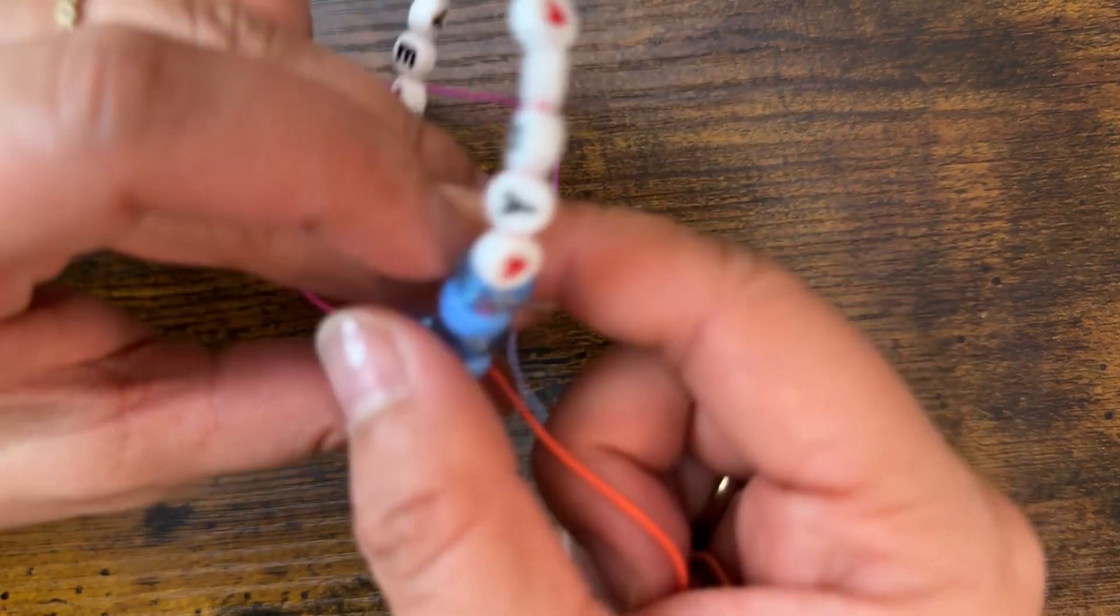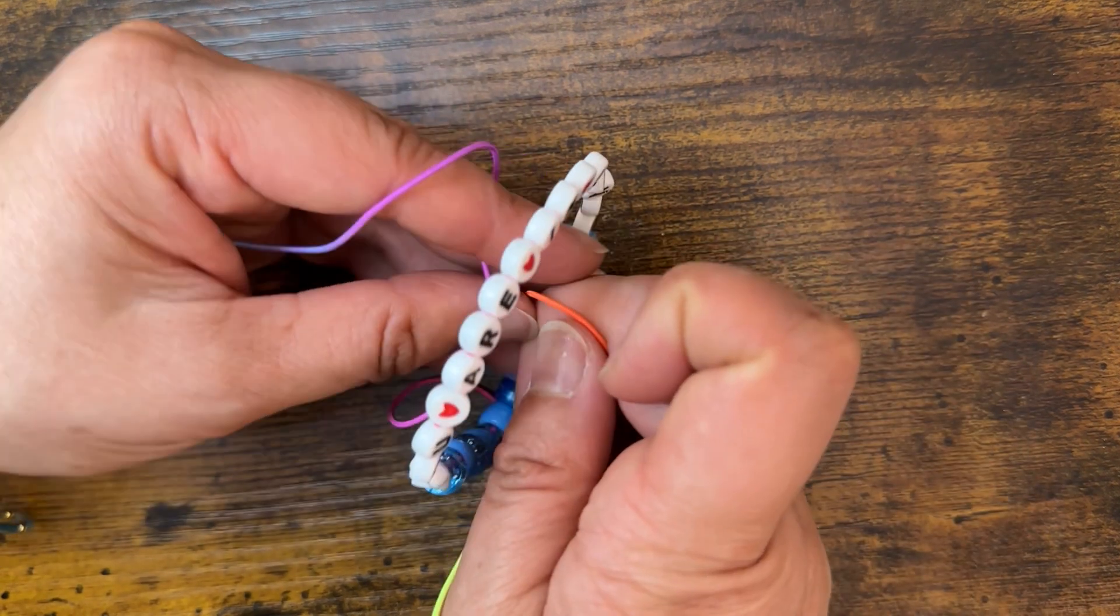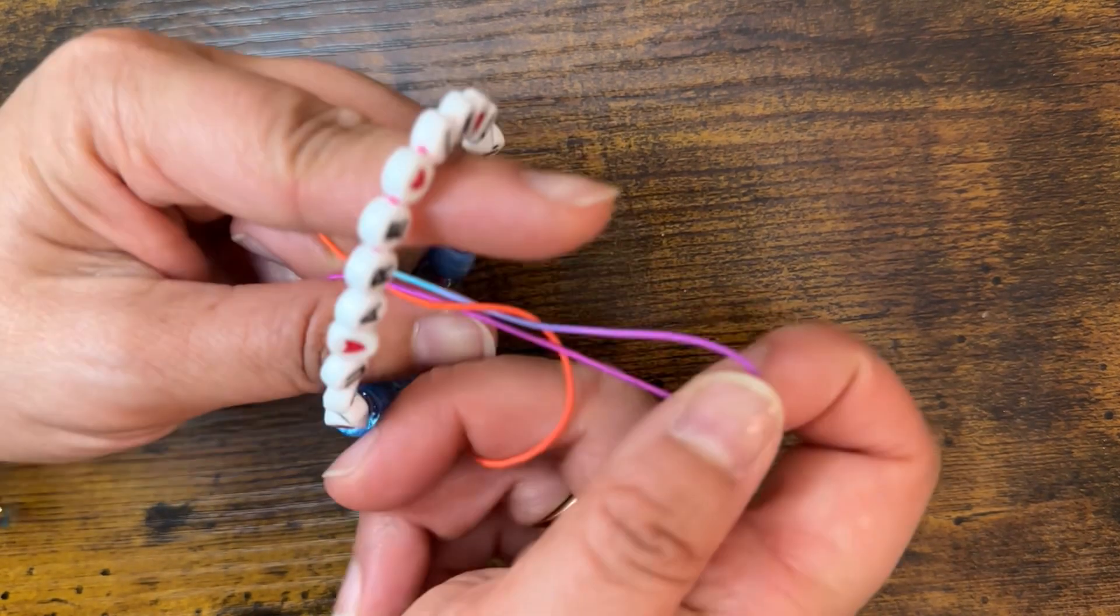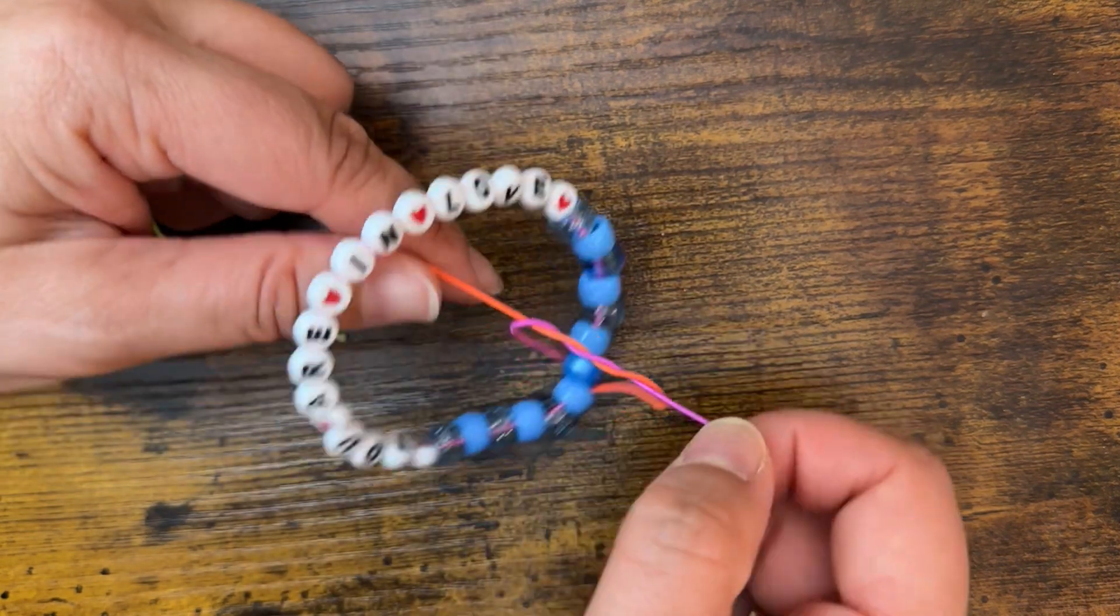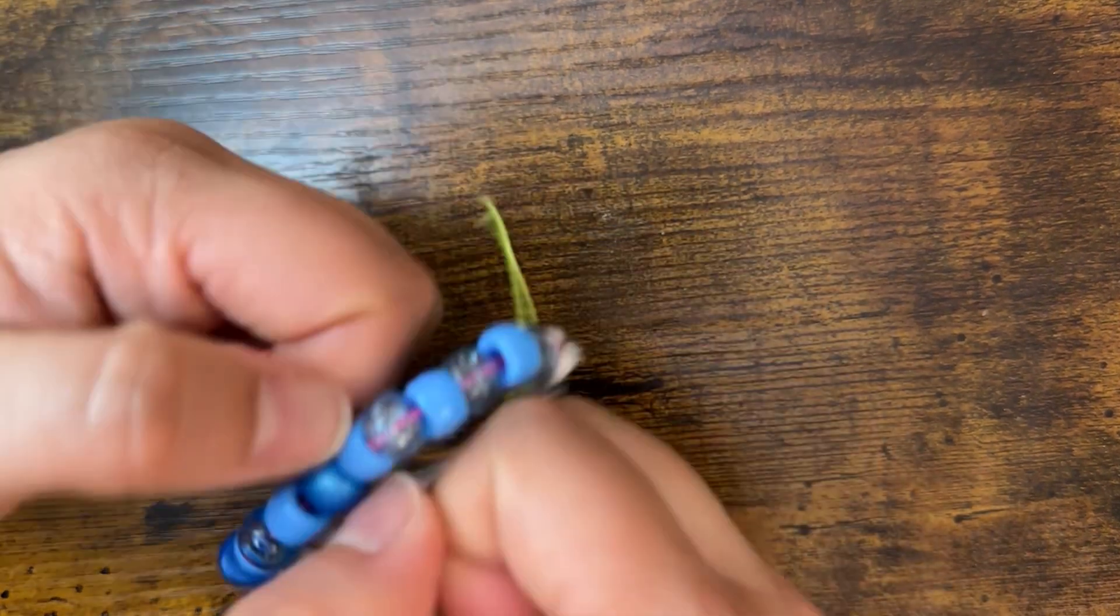Then what I like to do is flip it to the other side. That's why I use this string versus the alternative see-through string, which may look better, but in the long run it doesn't matter how good it looks if it doesn't stay. So then I do another double tie on the other side just to make it super secure, and then I just do one more tie.